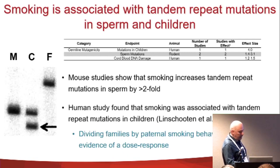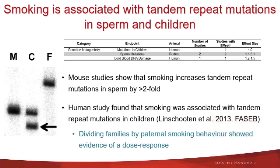There is also evidence that tobacco smoking induces tandem repeat mutations in both sperm and children — another endpoint with data in both humans and rodents. The number of studies is small, but virtually all found a significant effect. Mouse studies showed that smoking increased tandem repeat mutations in sperm by two-fold. Human studies also demonstrated not only an effect of smoking, but a dose-related effect — fathers who smoked more had transmitted more tandem repeat mutations to their children.